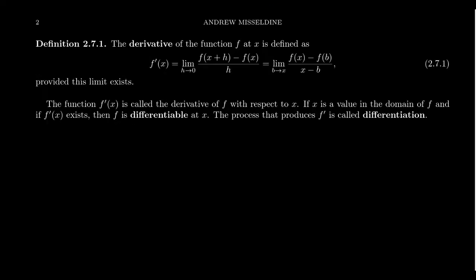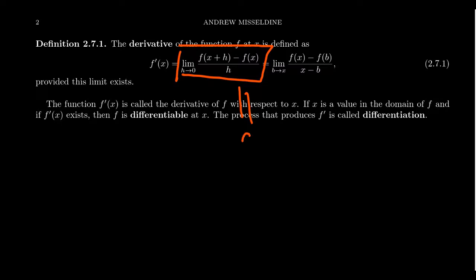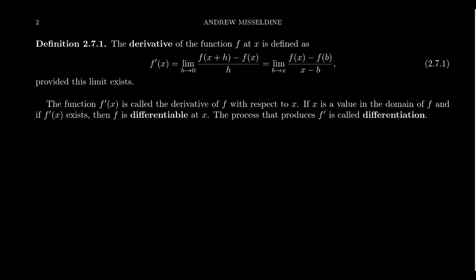So let's define it properly. Given a function f, we define the derivative of f at the point x to be the limit as h approaches 0 of [f(x+h) minus f(x)] over h. This limit of a difference quotient is just dy over dx — the instantaneous rate of change at x. So the derivative is the instantaneous rate of change of the function at a specific point. We often abbreviate this as f prime of x.